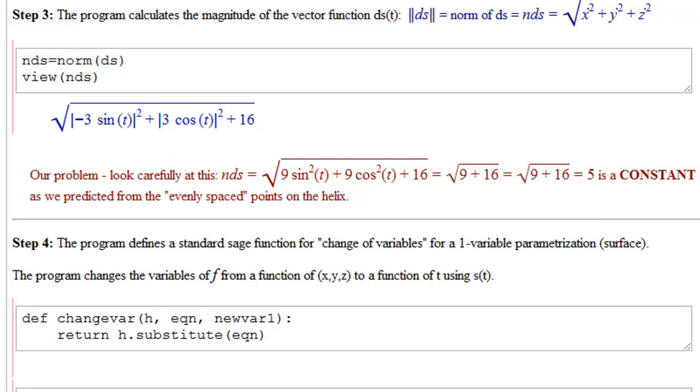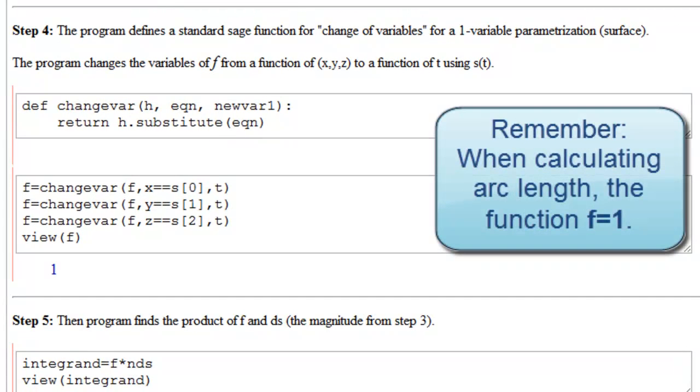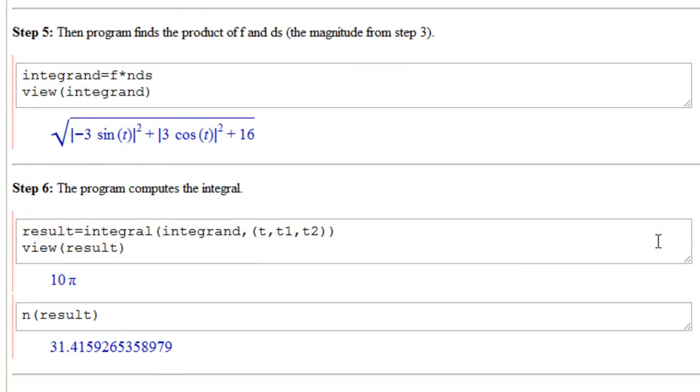We tell it to calculate the norm. Function in arc length is always 1, so we've defined our function to be 1. It multiplies our function times the norm of the derivative vector. It got it exactly at 10π, and then it computed it numerically. So the length of that piece of helix is approximately 31.42 linear units.